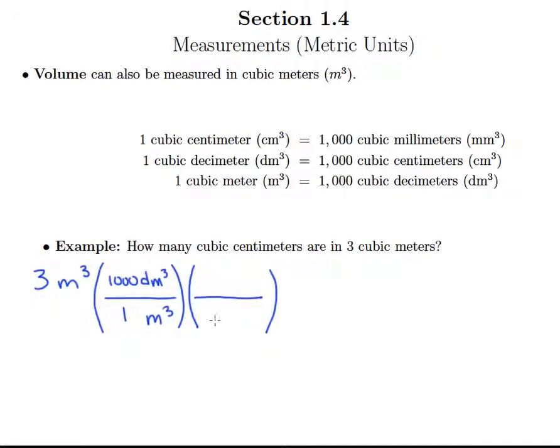And then to convert from cubic decimeters to cubic centimeters, of course, I need cubic decimeters below here, cubic centimeters above. And again, there are 1,000 cubic centimeters in one cubic decimeter.